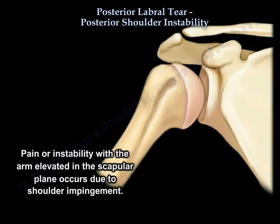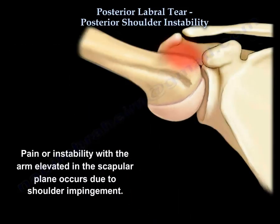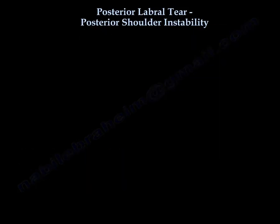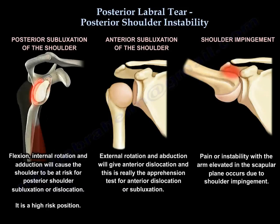Pain or instability with the arm elevated in the scapular plane occurs due to shoulder impingement. This is a summary of the provocative tests for posterior subluxation of the shoulder, anterior subluxation of the shoulder, and shoulder impingement.